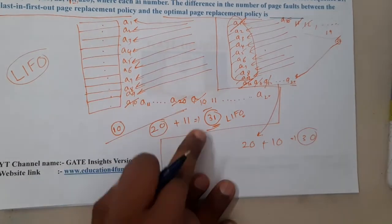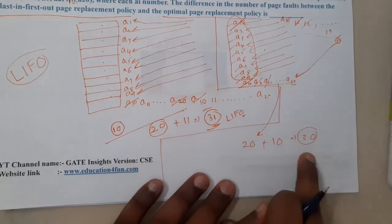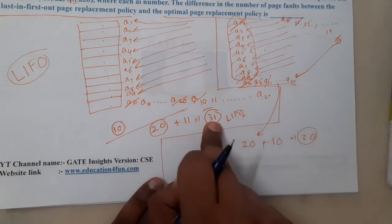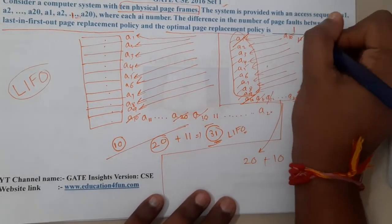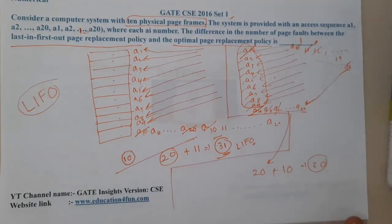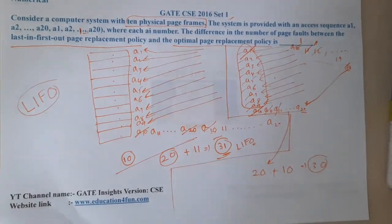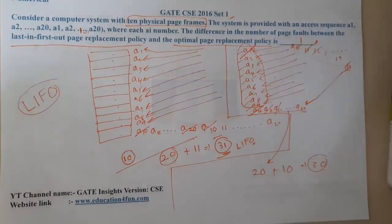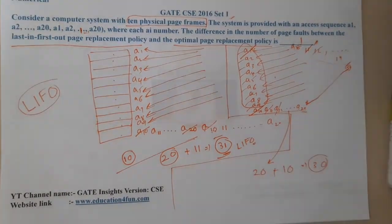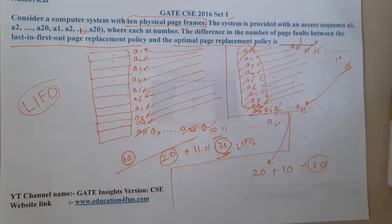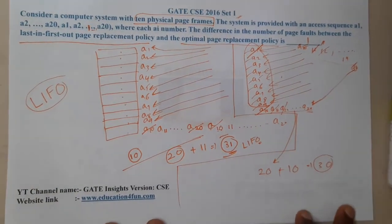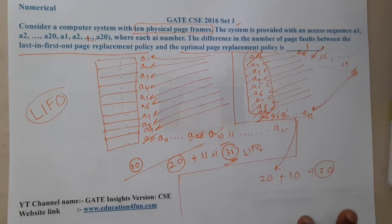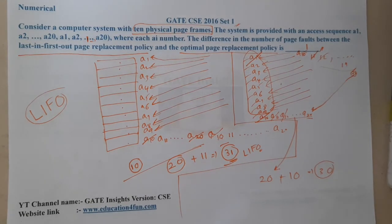The question asks for LIFO minus Optimal, which is 31 minus 30 = 1. That is quite an interesting question. I hope everyone got a clear idea of how Last-In-First-Out page replacement works. In the next lecture we will continue with the next question.